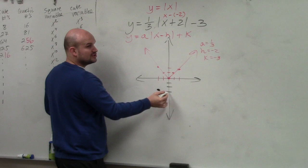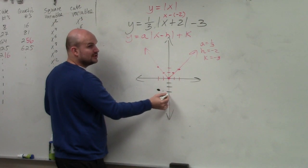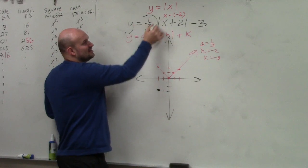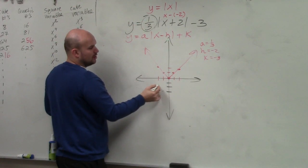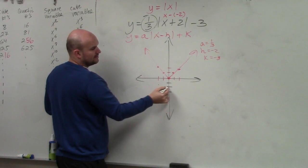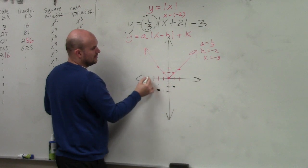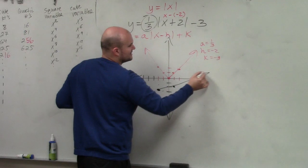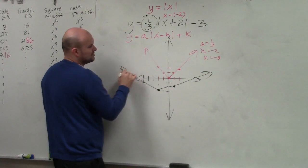Instead of going over 2, up 2, we go over 2, up 2 times 1/3. Another way to think about this is like a slope: up 1, over 3. You can see this graph is being stretched horizontally.